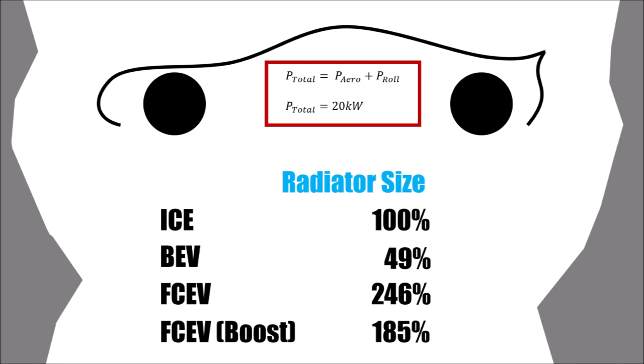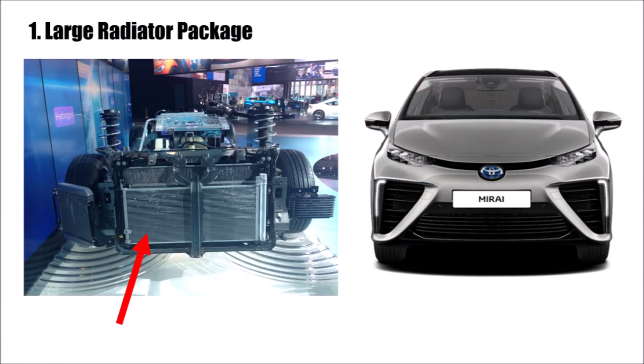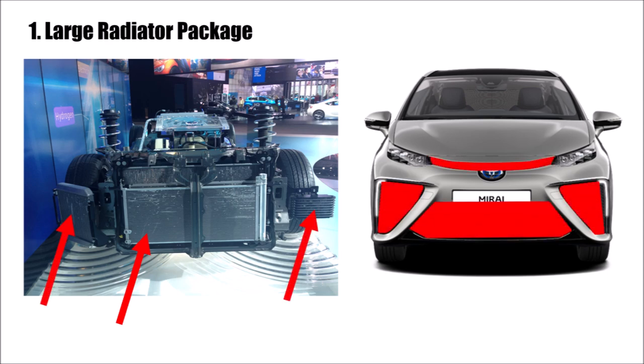So how do manufacturers solve this problem? First, they use the largest radiators they have for fuel cell vehicles plus additional side radiators. Of course that means they also need large air intakes and that increases drag.